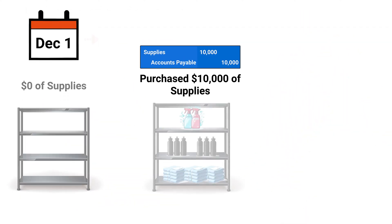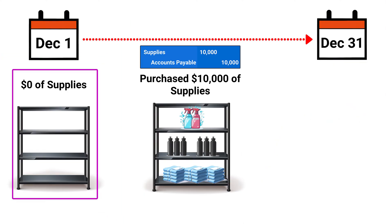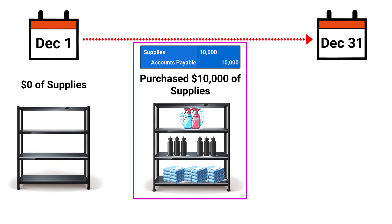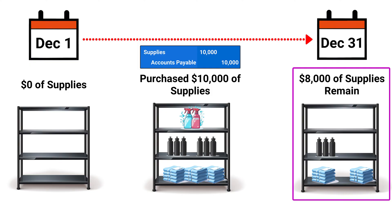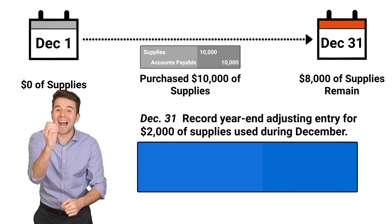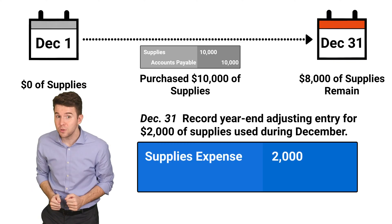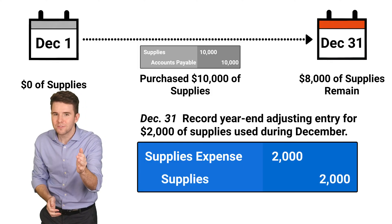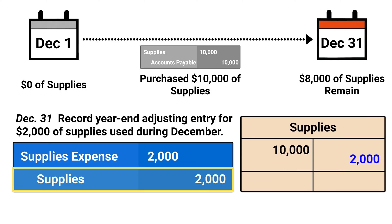Let's fast forward to the end of the accounting period, December 31st, when we physically count our supplies on hand. We started with no supplies and bought $10,000 of supplies during December. On December 31st, we physically count our supplies and see that we only have $8,000 of supplies left. This means we used $2,000 worth of supplies in December. Because we used those supplies, we need to record an adjusting entry on December 31st to recognize that expense. We record a debit to supplies expense for $2,000 and a credit to supplies for $2,000. We debit supplies expense because debits increase expenses, and we credit supplies for $2,000 to reduce that asset account to $8,000.